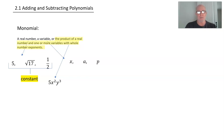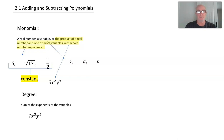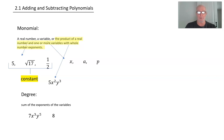Our next concern is the degree of the monomial. The degree is the sum of the exponents of the variables. So when we have a term like 7x³y⁵, the coefficient — the 7 — we don't care about. We're looking at the exponents of the variables: 3 plus 5 is 8. So the degree of that monomial is 8.